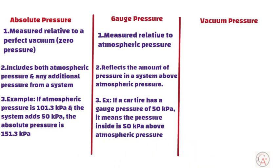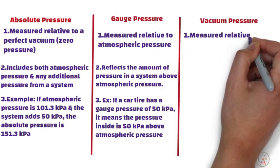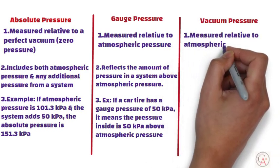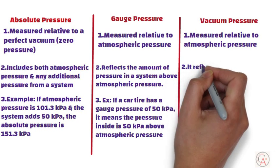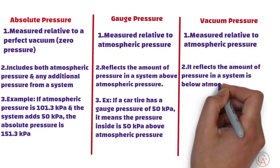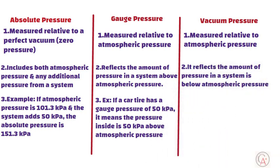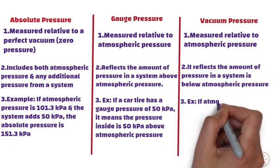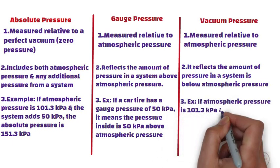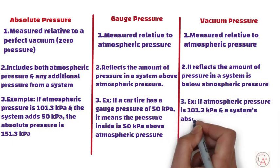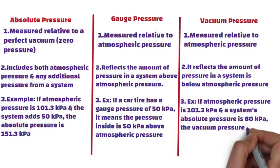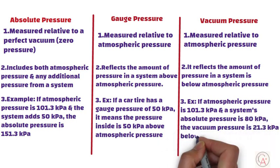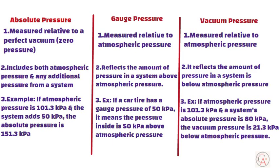Finally, vacuum pressure. It is also measured relative to atmospheric pressure. However, it reflects the amount of pressure in a system below atmospheric pressure. For example, if the atmospheric pressure is 101.3 kilopascals and the system's absolute pressure is 80 kilopascals, the vacuum pressure is 21.3 kilopascals.